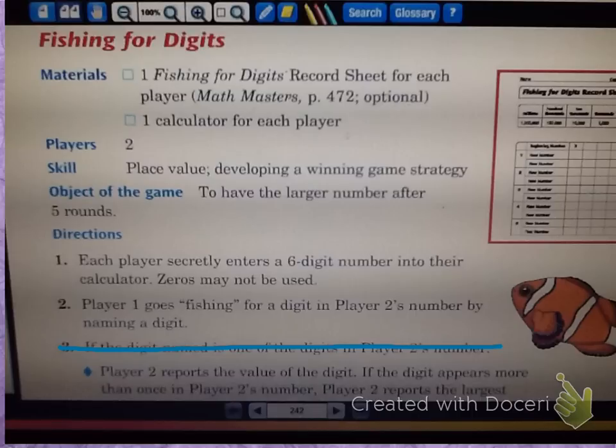First, each player is going to secretly enter a six digit number into their calculator, but you cannot use zeros. So on your record sheet, you're going to record that number at the top, and you're not going to let your partner see what number you wrote. And then player one is going to go fishing, as they call it, for a digit. So it's kind of like the game Go Fish, except you're not using cards. You're fishing for numbers. So you might ask your partner, does your number have a four? And they're going to tell you yes or no.